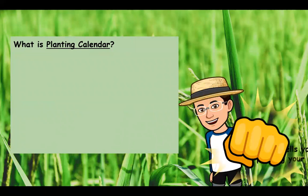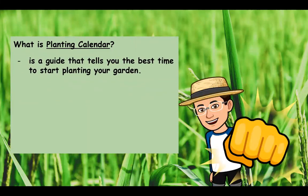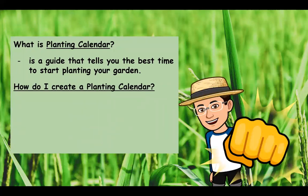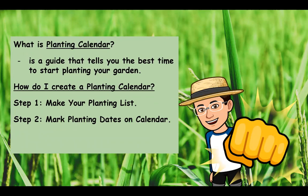You also need to have a planting calendar — a guide that tells you the best time to start planting your garden. To create a planting calendar: number one, make your planting list — the list of vegetables you want to plant in a specific area after checking your location and the type of soil. Number two, mark planting dates on the calendar.